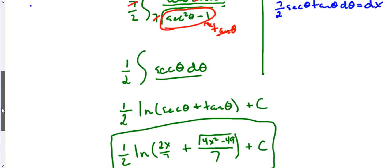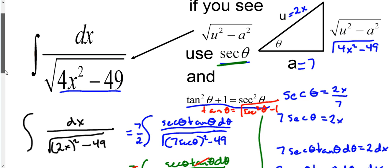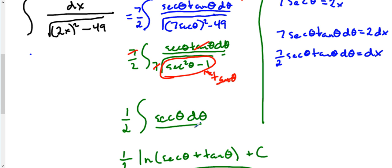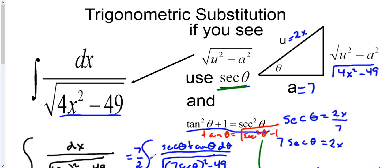So to summarize: there are a lot of moving parts here, but the key is to identify the difference of two squares under a square root. Set up your secant triangle, substitute to eliminate x and dx, simplify using trig identities, evaluate the integral, then back-substitute the theta's in terms of x. I hope this helps — good luck!